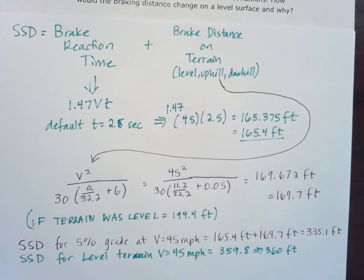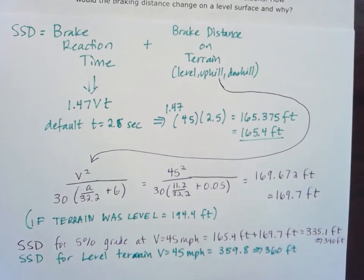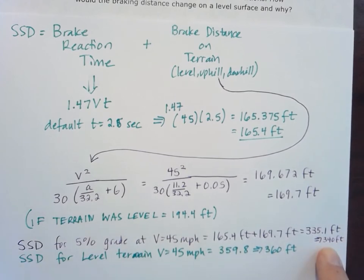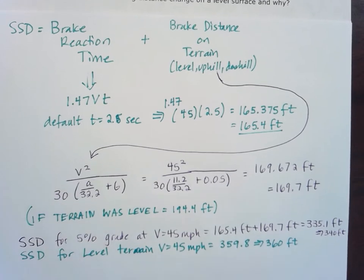But either way you slice it, the stopping sight distance on the level terrain is going to be higher than the stopping sight distance for the grade. So we've checked those. And now the question is, why? Why is it so different? Well, I think we kind of talked about this already, but just to write it down here.